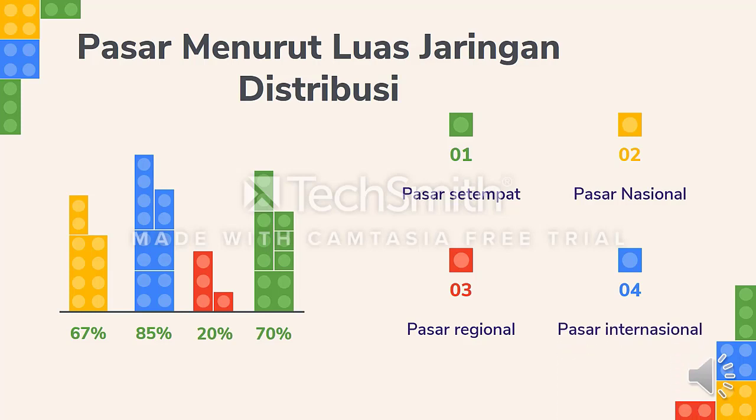Keempat adalah pasar internasional, yaitu pasar yang menyediakan komoditas barang dagangan untuk rakyat seluruh dunia. Biasanya komoditi yang dijual merupakan produk-produk yang dibutuhkan oleh seluruh masyarakat.